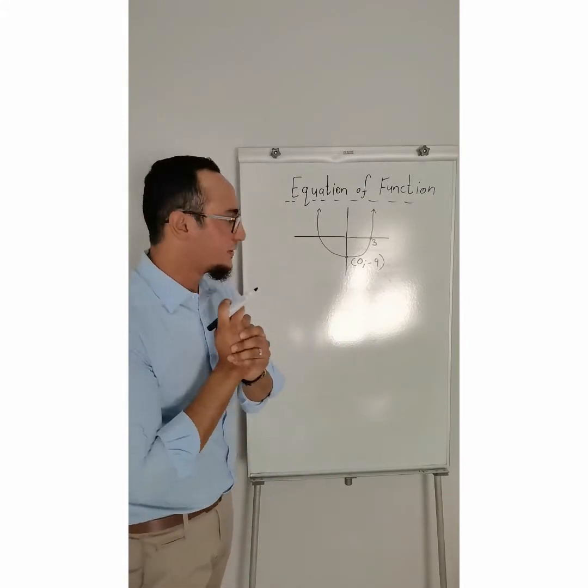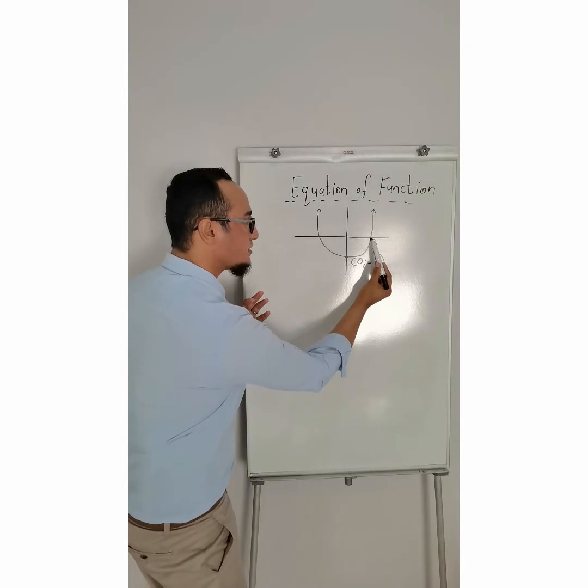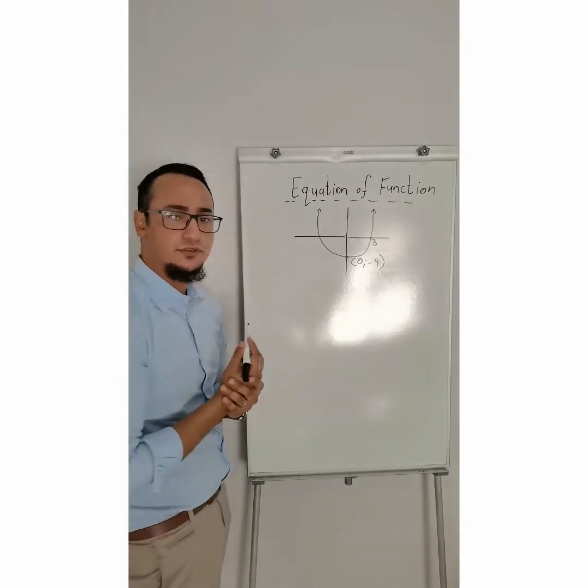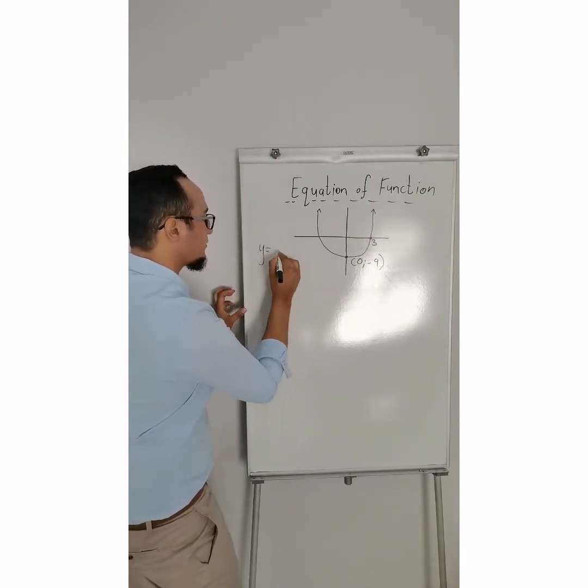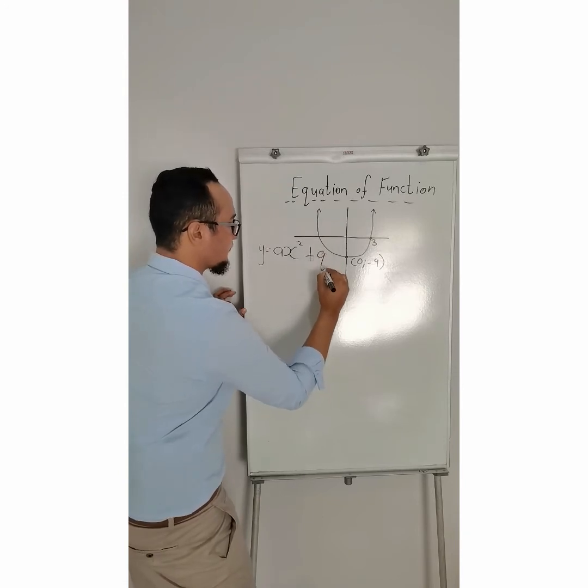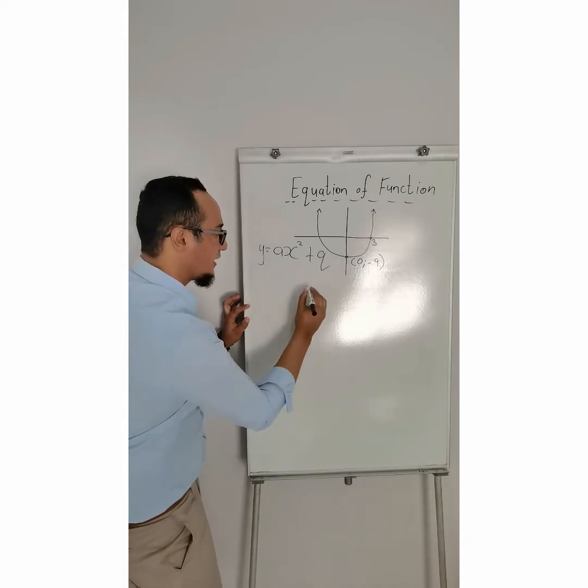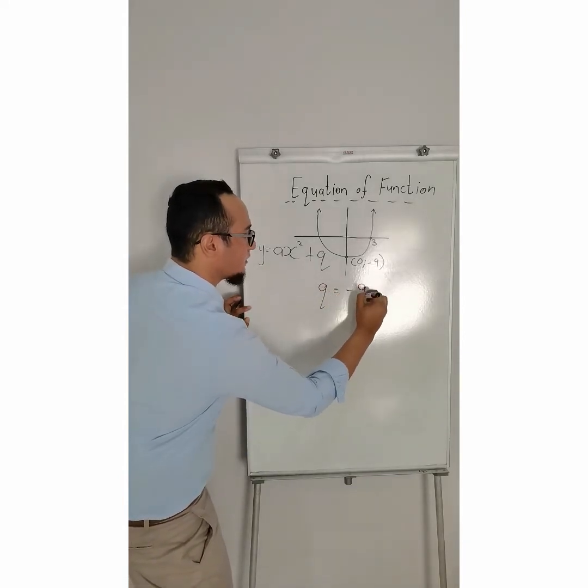Over here, I have a parabola with two known points. One is 3 and 0, and another is 0 and negative 9. So, what's my formula? y is equal to ax squared plus q. What do we know about our q? To be my intercept over here,